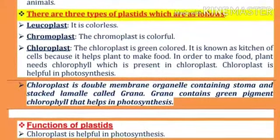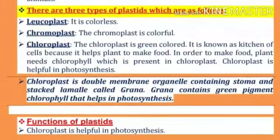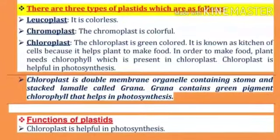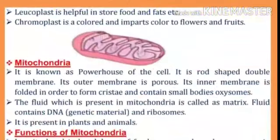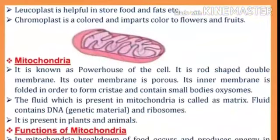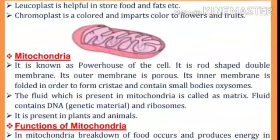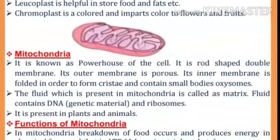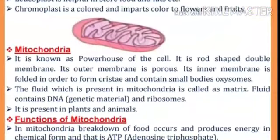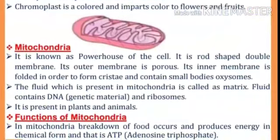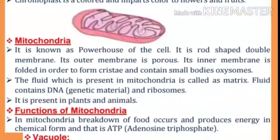Functions of plastids: Chloroplast is helpful in the photosynthesis process. Leukoplast is helpful in storing food and fats. Chromoplast is colored and imparts color to flowers and fruits.